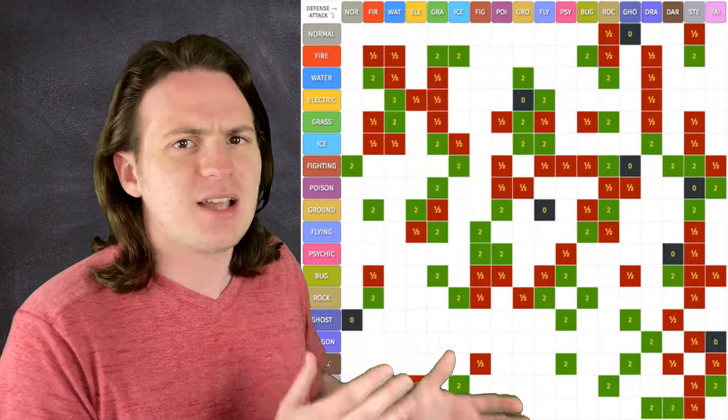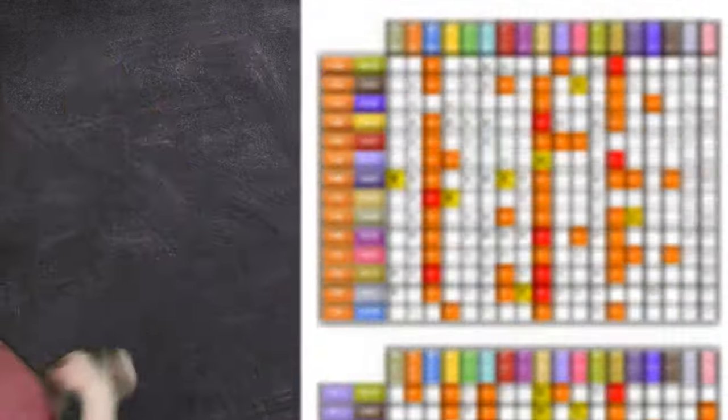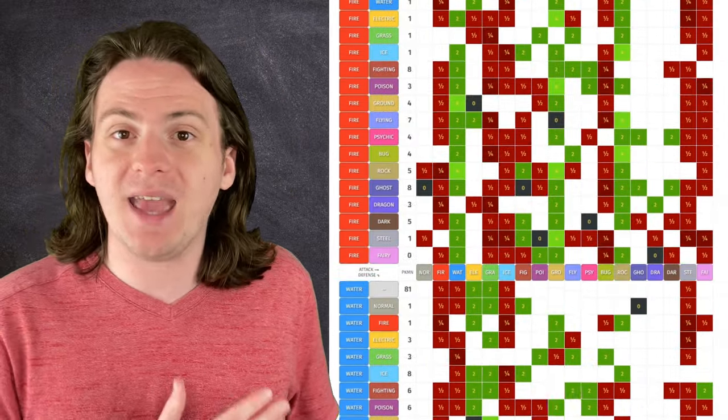All that is to say, for any dual type Pokemon, the simple type chart goes from something like this to something more like this. Luckily, this is as bad as it gets.